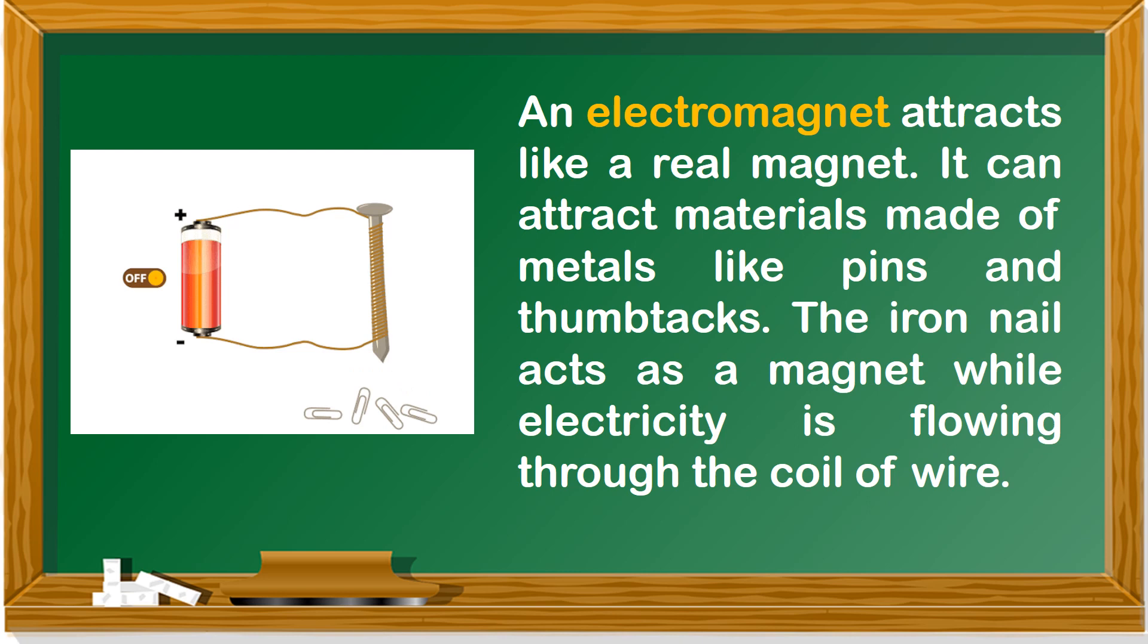An electromagnet attracts like a real magnet. It can attract materials made of metals like pins and thumbtacks. The iron nail acts as a magnet while electricity is flowing through the coil of wire.